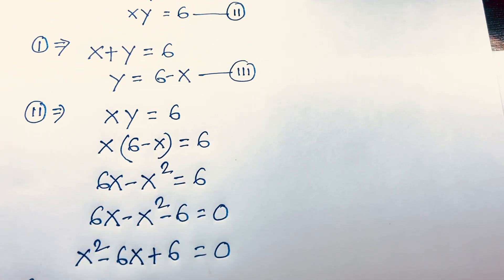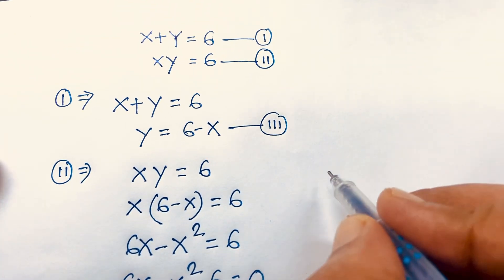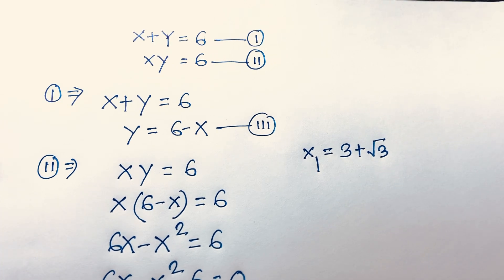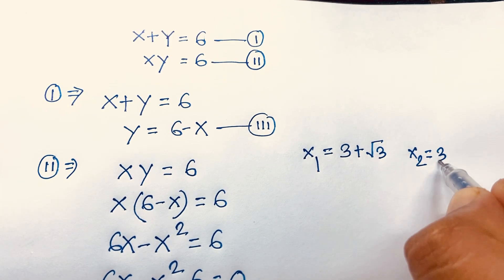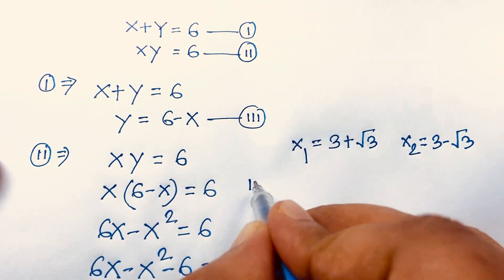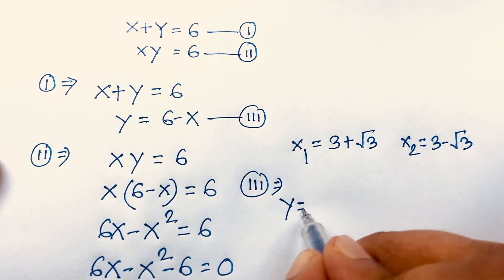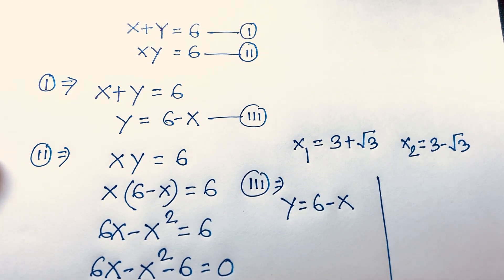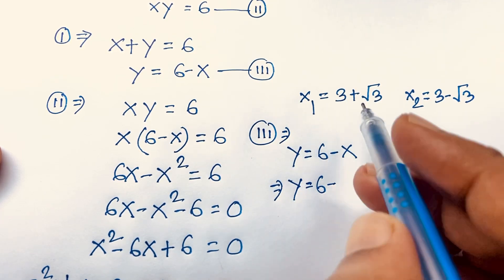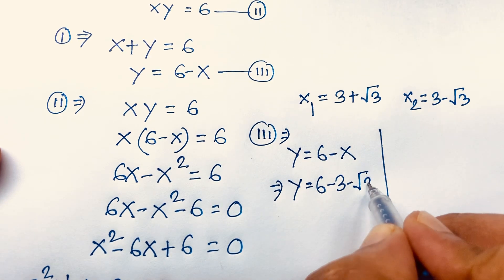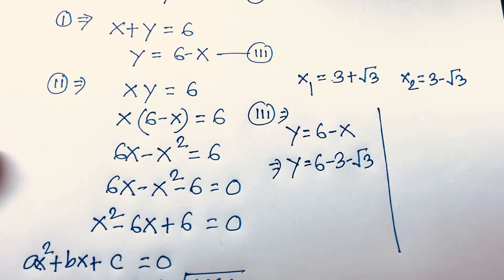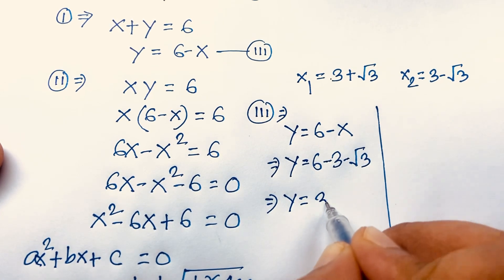So x1 equals 3 plus square root 3 and x2 equals 3 minus square root 3. To find y, we use the third equation y equals 6 minus x. When x equals 3 plus square root 3, y equals 6 minus (3 plus root 3), which gives y equals 3 minus square root 3.